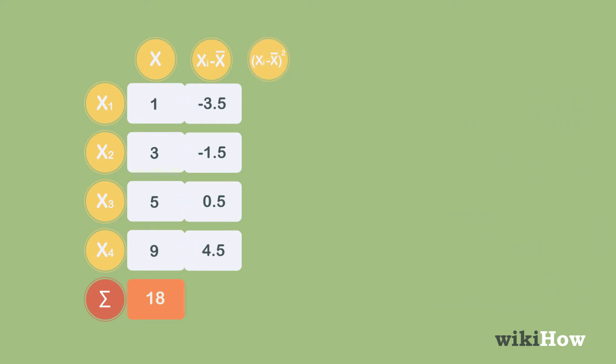Next, square each of those differences by multiplying each number by itself. If you square negative 3.5, negative 1.5, 0.5, and 4.5, you get 12.25, 2.25, 0.25, and 20.25.